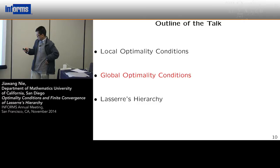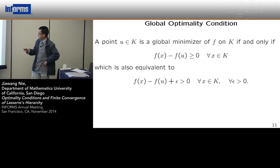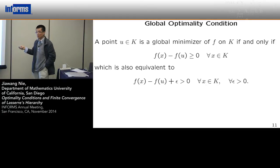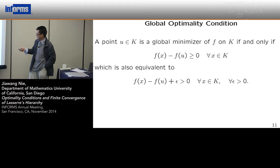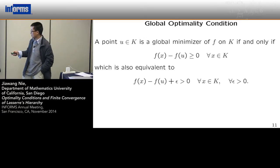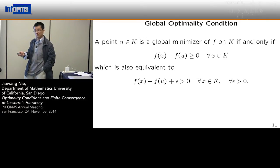Now let's talk about the global optimality conditions. A point u is a global minimizer by definition if F(x) minus F(u) is non-negative for every feasible point. The definition itself tells us nothing, but we can play a trick: this is the same as saying F(x) minus F(u) plus epsilon is positive for every x in the feasible set K. In the representation of polynomials, this makes a difference.